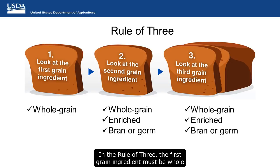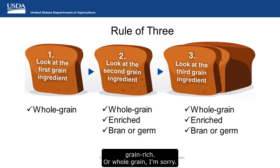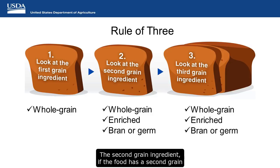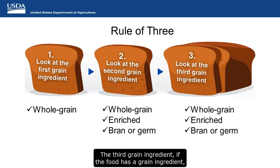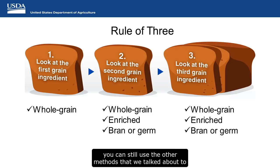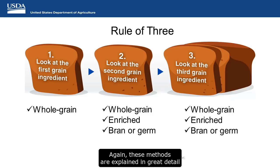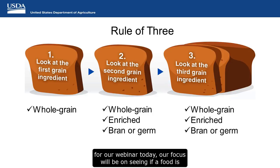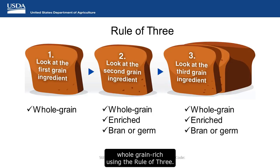In the rule of three, the first grain ingredient must be whole grain. The second grain ingredient, if the food has one, must be whole grain, enriched, bran, or germ. If your food does not meet this criteria, you can still use the other methods we talked about to see if your food is whole grain rich. Those methods are explained in detail starting on page three of the handout, but our focus today will be on seeing if a food is whole grain rich using the rule of three.